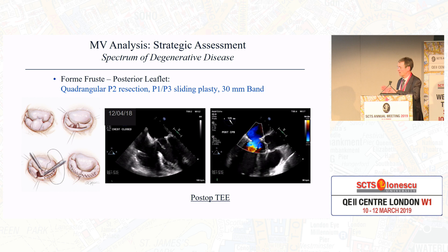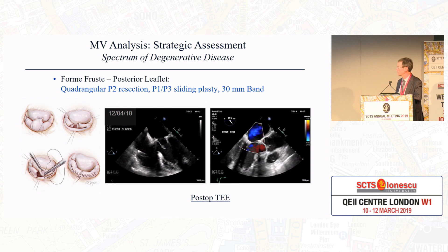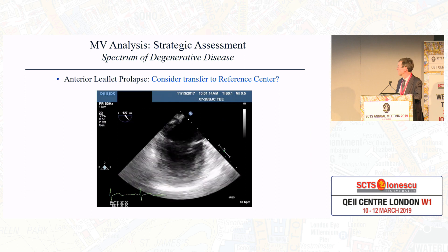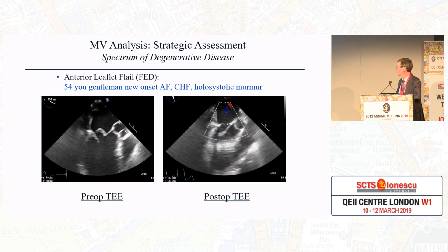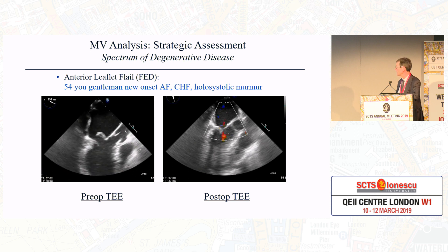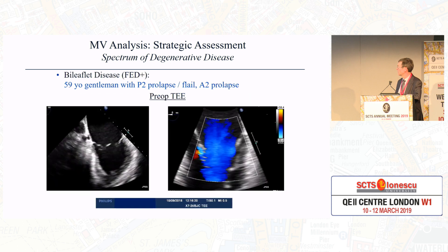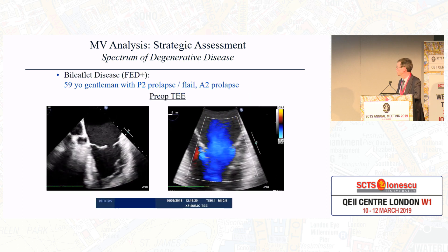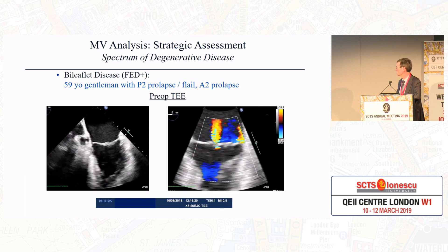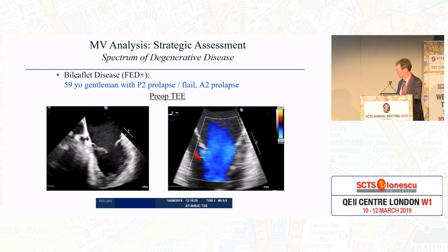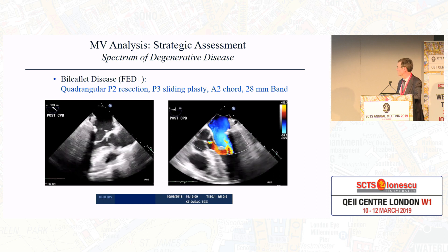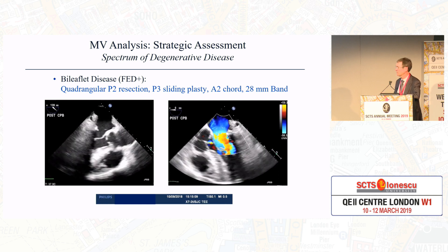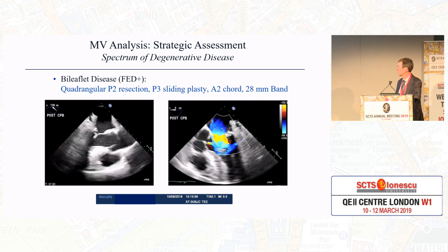The key is to look at each segment and analyze it individually, because for each lesion, you need an independent repair. For anterior leaflet prolapse, which is more complicated, we should consider transfer to a reference center. Here is a gentleman with anterior leaflet prolapse from a ruptured cord. With bileaflet disease — P2 prolapse and A2 prolapse — you can see two separate jets. Following quadrangular resection with a sliding plasty and a cord, one surgical technique for each lesion is the approach for repairing these complex diseases.